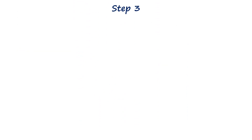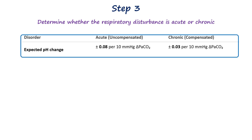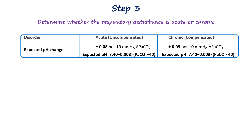Step 3 is to determine whether the respiratory disturbance is acute or chronic. Acute respiratory disturbances occur rapidly due to sudden changes in CO2 levels, while chronic respiratory disorders develop gradually, allowing the kidneys to compensate. In acute respiratory disturbances, blood pH changes significantly — about 0.08 units for every 10 mmHg change in CO2 levels. In chronic respiratory disorders, the pH change is much smaller, only about 0.03 for the same CO2 change, because the kidneys adjust bicarbonate levels to maintain a near-normal pH.